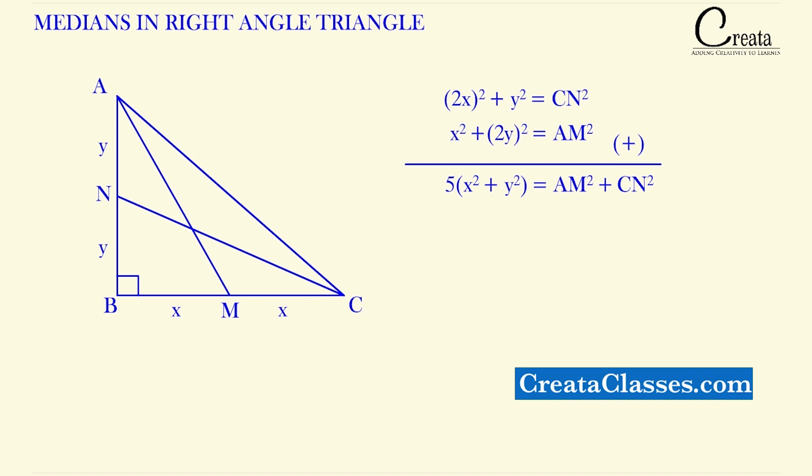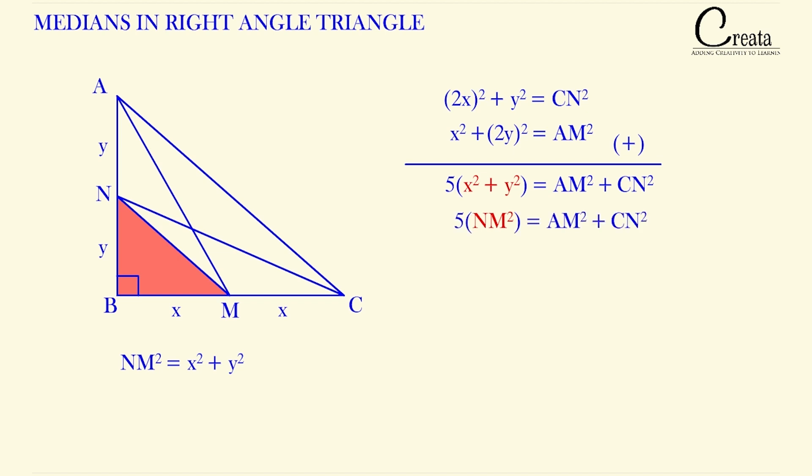Can we replace X square plus Y square with NM square? How? Let's see. If we take the triangle NBM, this small triangle, and apply the Pythagoras, we got NM square is equal to X square plus Y square. So we can replace X square plus Y square with NM square. So we got our relation as 5NM square is equal to AM square plus CN square.